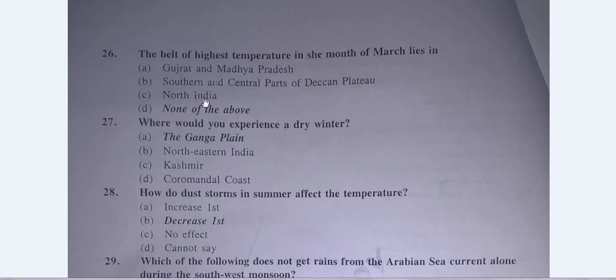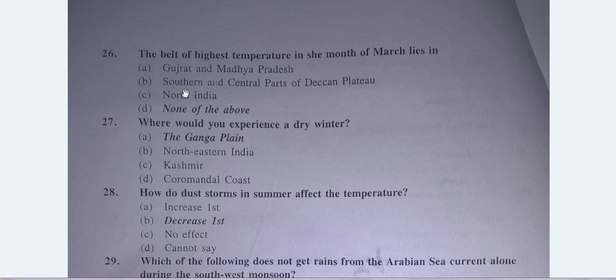Question No. 26: The belt of highest temperature in the month of March lies in — A. Gujarat and Madhya Pradesh, B. Southern and Central parts of Deccan Plateau, C. North India, D. None of the above. The answer is: none of the above.